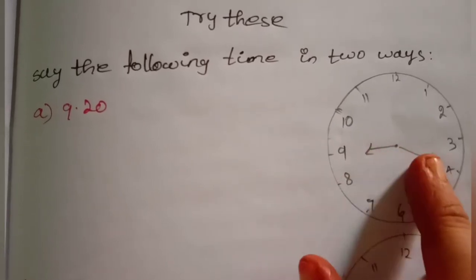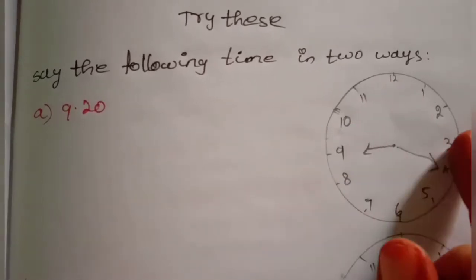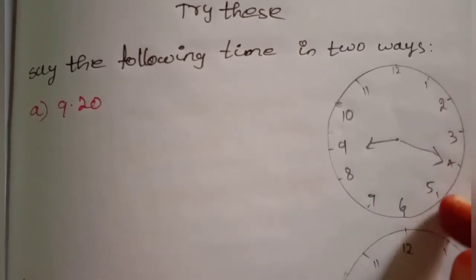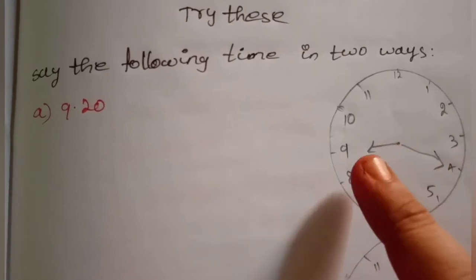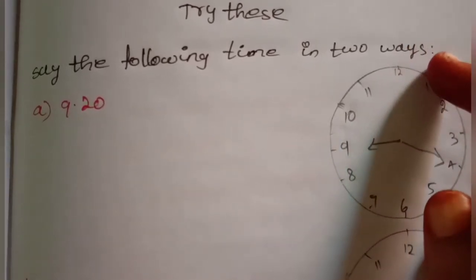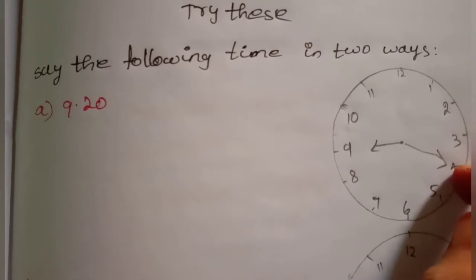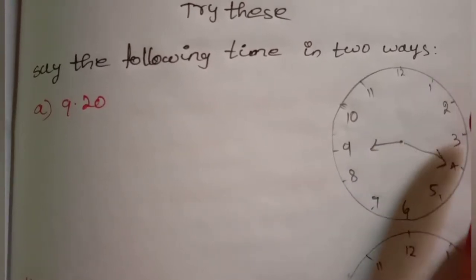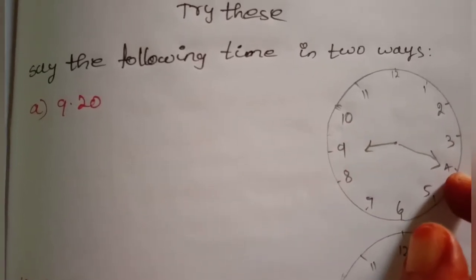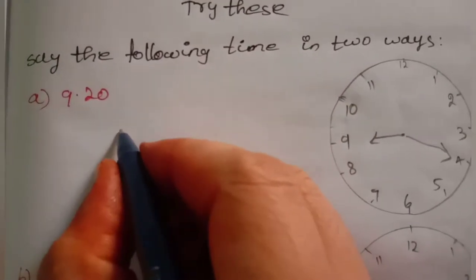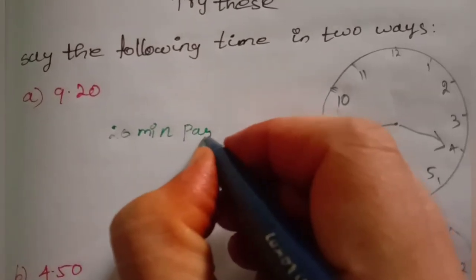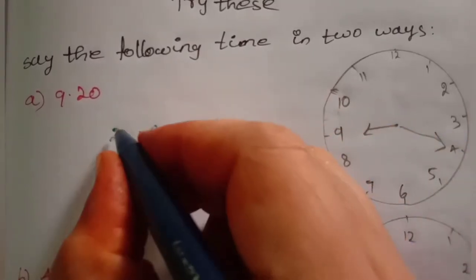Now we come in a minute hour — 6 and 12, right side. Now we come in a past time. The minute hand is at 9 o'clock. How do you count from 12? Count the cups: 5, 10, 15, 20. So the minute hand is at 9 o'clock, that gives us 20 minutes. We write: 20 minutes past 9.